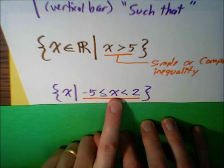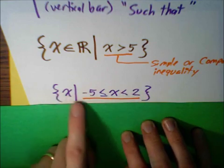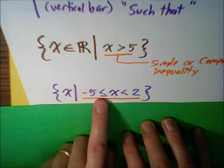You can say negative 5 is less than or equal to x, and x is less than 2. But again, the set of all values x, such that negative 5 is less than or equal to x, and x is less than 2.